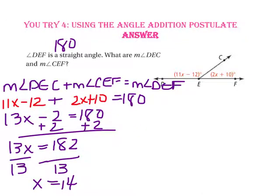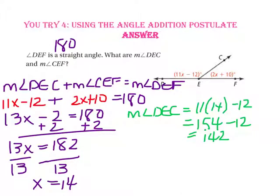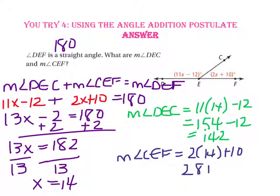Substituting 14 in for X: the measure of angle DEC equals 11 times 14, which is 154, minus 12 — giving us 142. So the measure of angle DEC is 142. The measure of angle CEF is 2 times 14, which is 28, plus 10 — which is 38. Let's check by adding: is 142 plus 38 equal to 180? Since it is, we know we are correct.